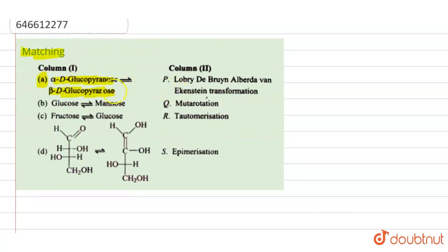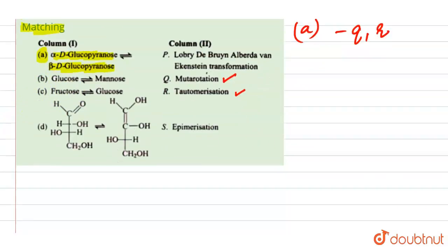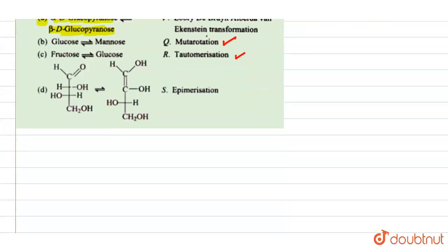So for option A, the correct answers are Q and R. Next, let's discuss glucose and mannose — their structures.